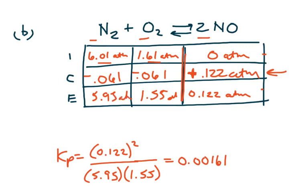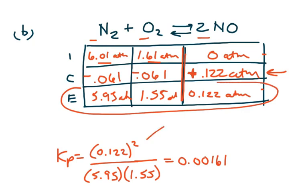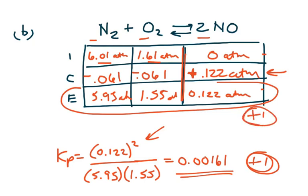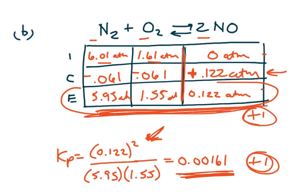Now I fill in the equilibrium row values. These numbers go into the Kp expression. Don't forget to square the NO partial pressure — it has a coefficient of 2. When I calculate it all out, I get Kp = 0.00161. On the scoring guideline, there's one point for the correct answer and one point for correctly determining the equilibrium partial pressures in the ICE table. So even if you didn't get the final answer, correctly completing the ICE table earns partial credit.